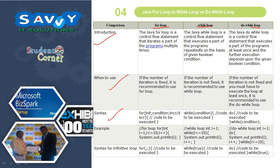For any loop, three things are common: one is initialization, second is condition, and third is the iterator. In the next video we will discuss the syntax and flowcharts of while, do-while, and for in detail. Also, for infinite loops: no condition, no initialization, no iterator — it is automatically an infinite loop. Using 'while true' is also an infinite loop, and 'do-while true' is also an infinite loop.